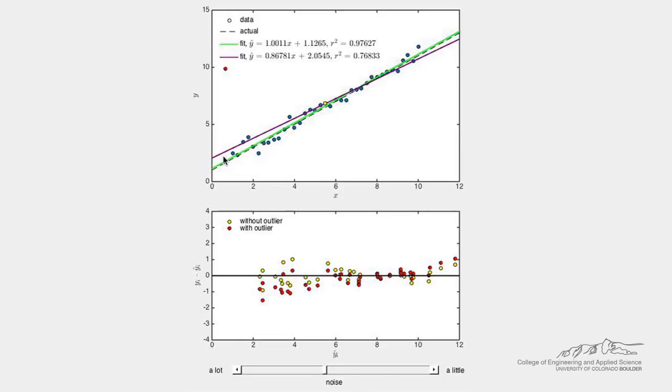Adding this outlier significantly affects the line of best fit, shown in purple, compared to the original line of best fit, and the residual plots, now shown in red, compared to the original residuals shown in yellow.